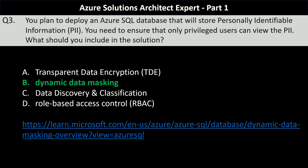Option D, role-based access control is used to manage access at the control plane level, but here we are talking about access at the data plane level, so it is also an incorrect choice. Options A, C, and D are therefore incorrect. If you still have any doubts, please post them in the comment section and I'll try to address them as soon as possible.